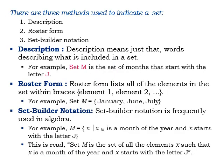There are three methods used to indicate a set: description, roster form, and set-builder notation. Through description, we use words to describe what is included in the set. For example, set M is the set of months that start with the letter J. In roster form, all elements of the set are listed within curly braces. For example, set M equals {January, June, July}.